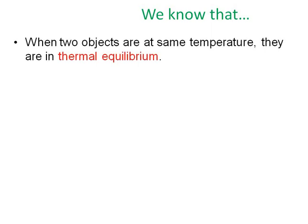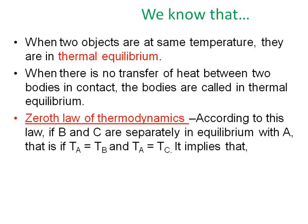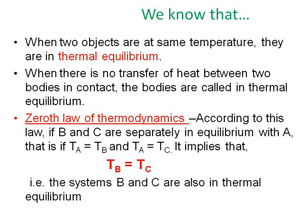We know that in thermodynamics, when two objects are at the same temperature, we can say they are in thermal equilibrium. According to the 0th law of thermodynamics, if B and C are separately in equilibrium with A — that is, if temperature of A equals temperature of B, and temperature of A equals temperature of C — it implies that temperature of B will be equal to temperature of C.